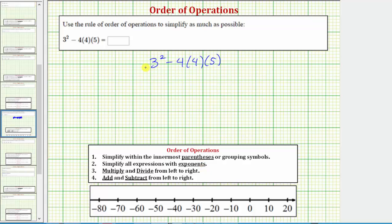Here we have an expression with an exponent of two. Three squared is equal to three times three, which equals nine. So this simplifies to nine minus four times four times five.